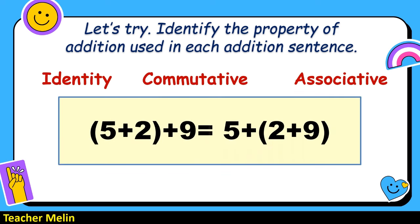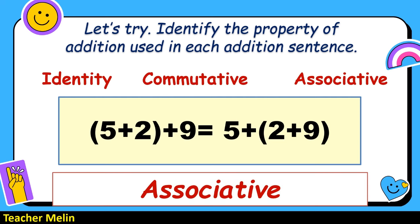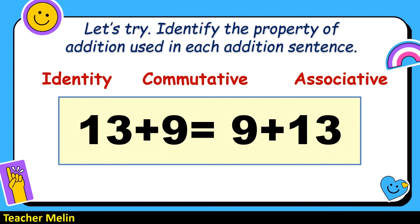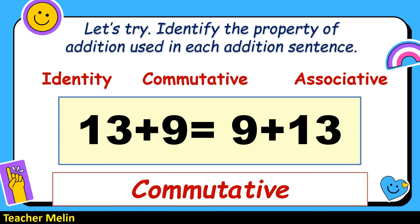How about 5 plus 2 plus 9 equals 5 plus 2 plus 9? On the left side, 5 and 2 are grouped. On the right side, 2 and 9 are grouped. The answer is associative — this is an associative property of addition. How about 13 plus 9 equals 9 plus 13? The correct answer is commutative — this is a commutative property of addition.